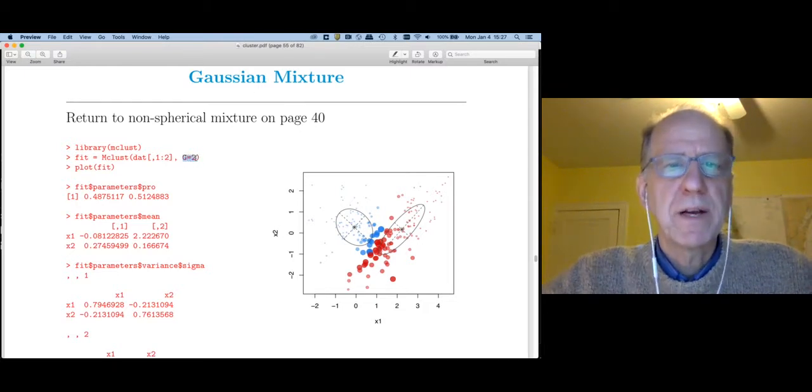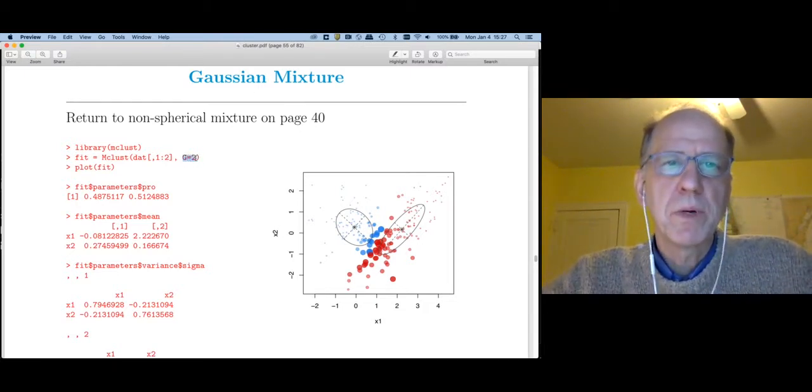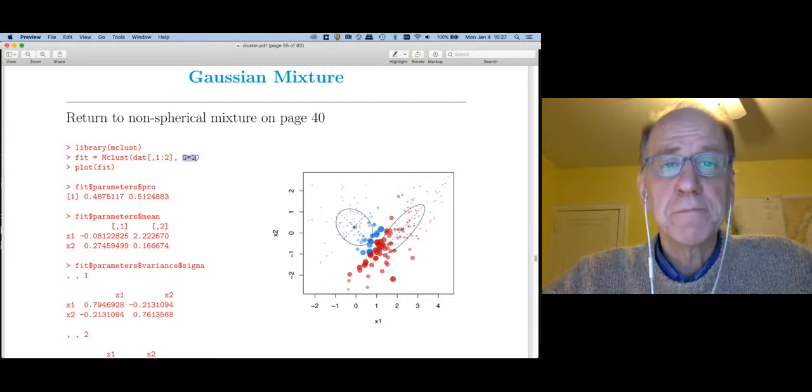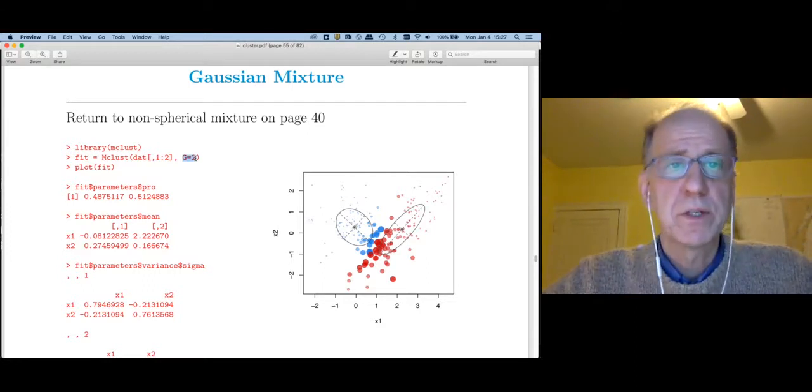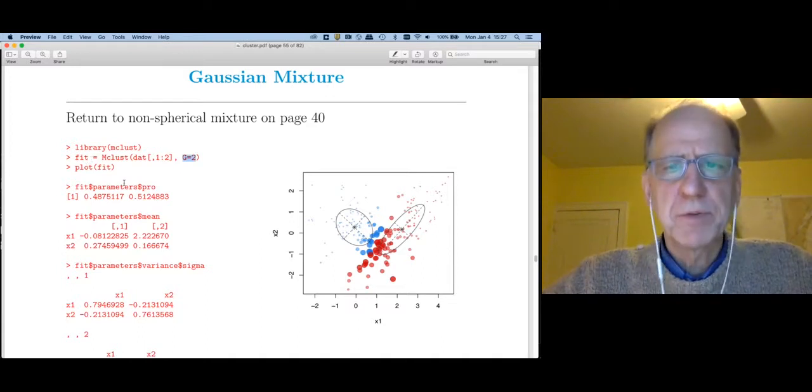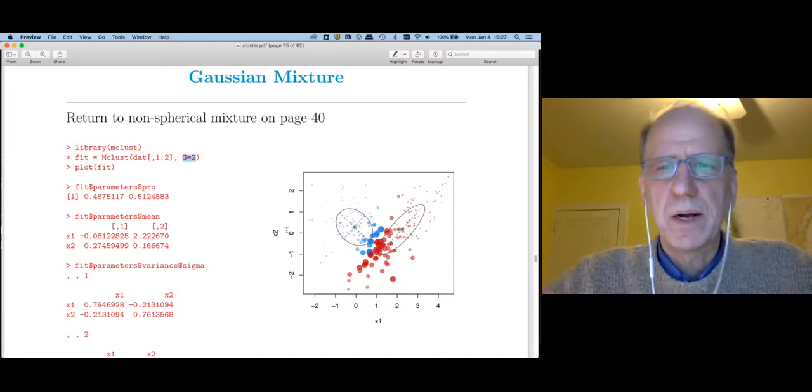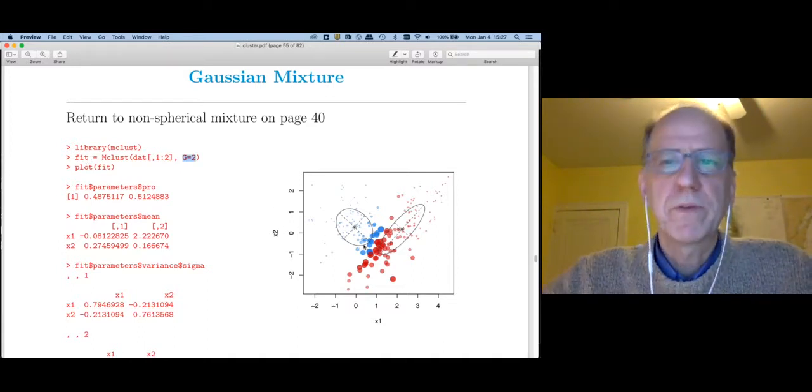To do that we'll use the mclust library just as we did with the old faithful data and my other contrived data set. I'm going to specify that I want two clusters. mclust uses big G instead of big K for the number of clusters. You just have to live with that. If we plot the fitted object, we get several plots with one of them off to the right.